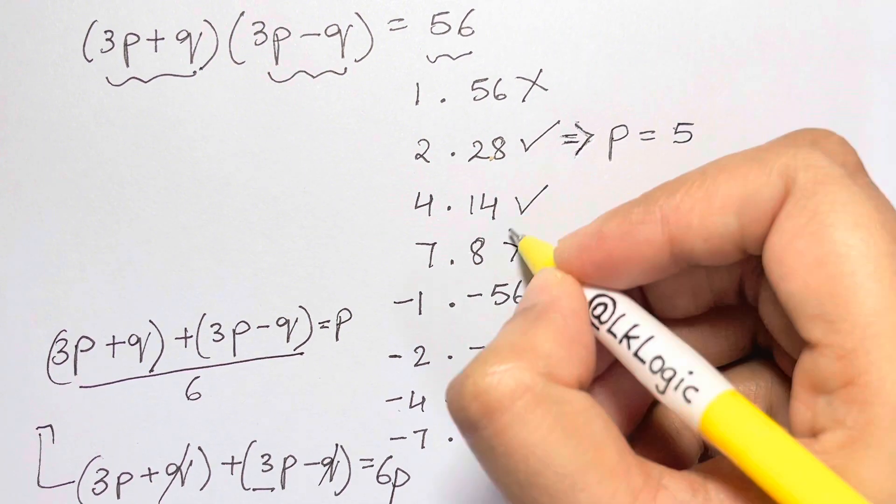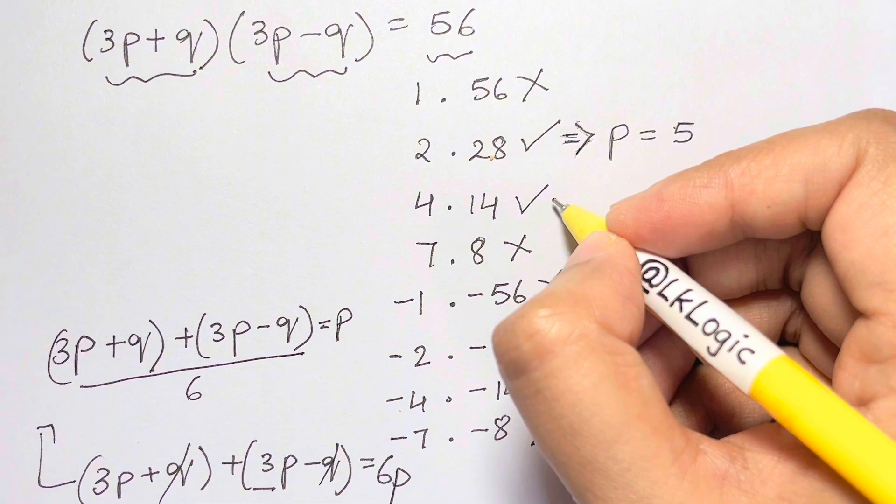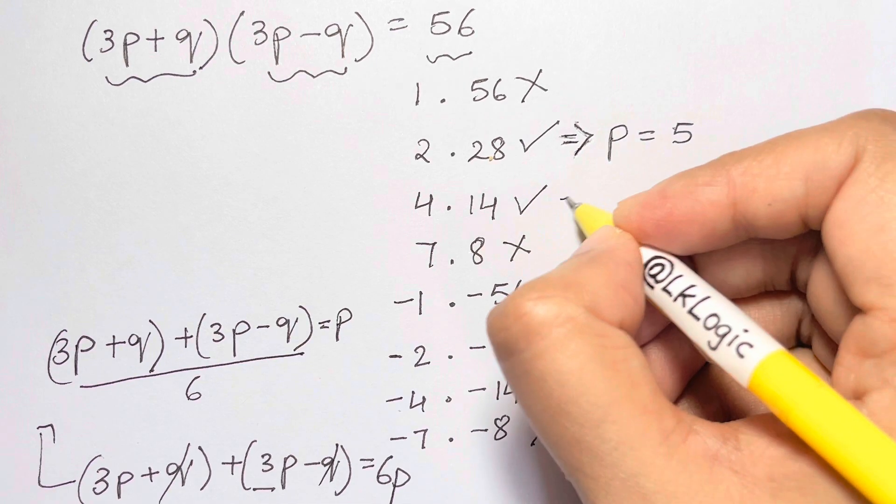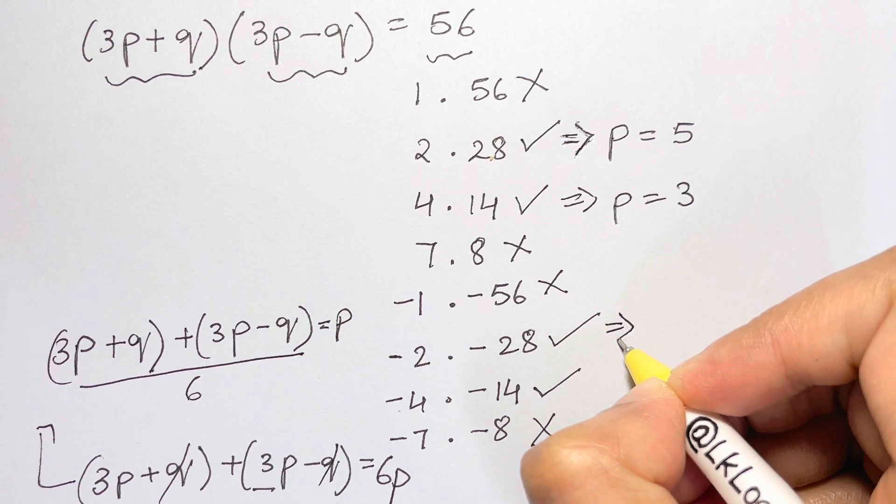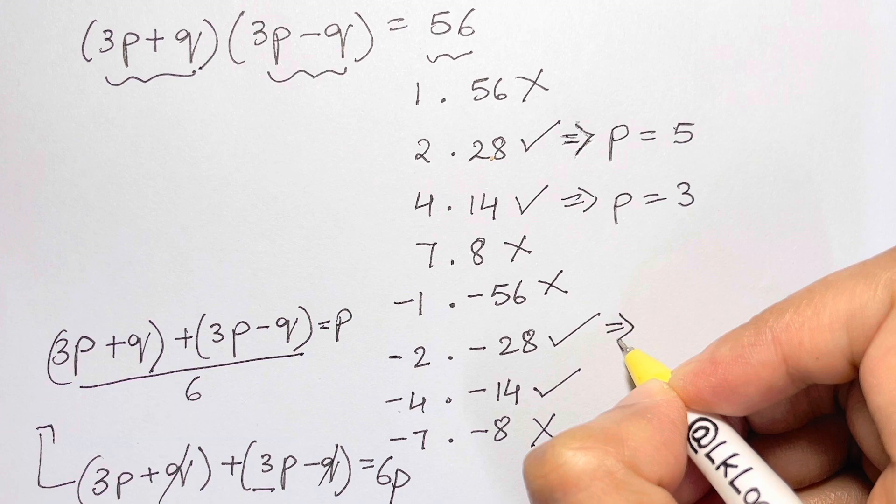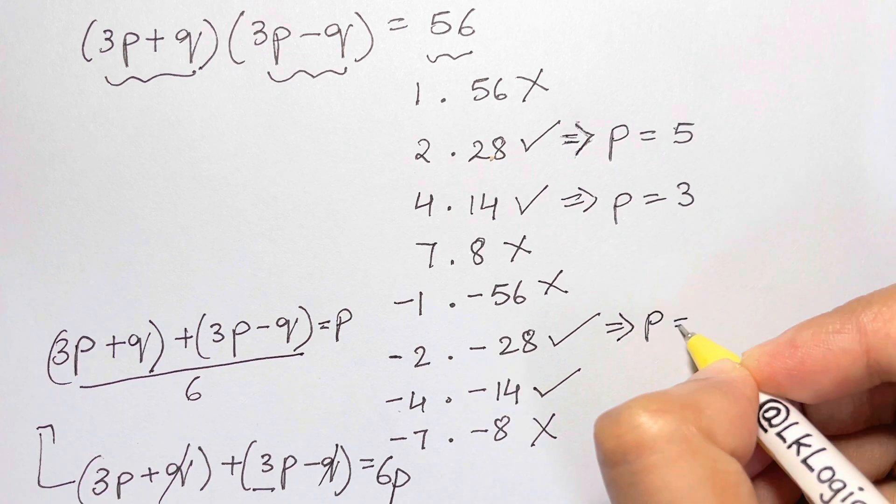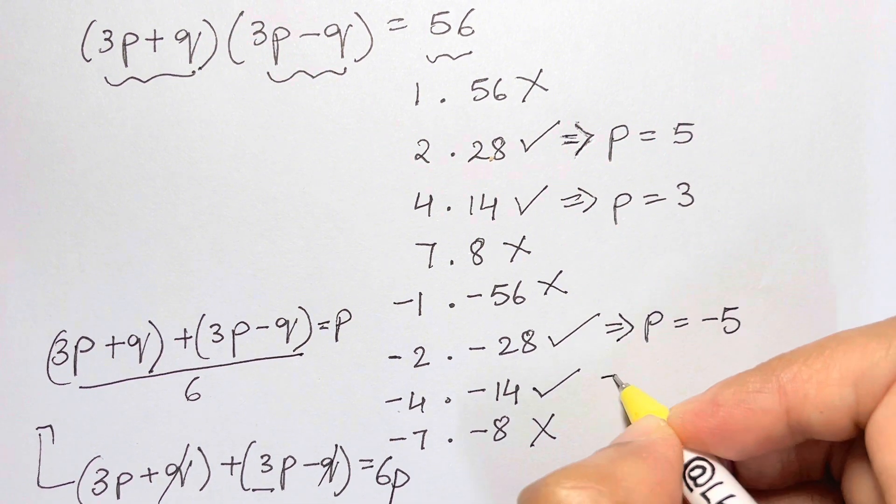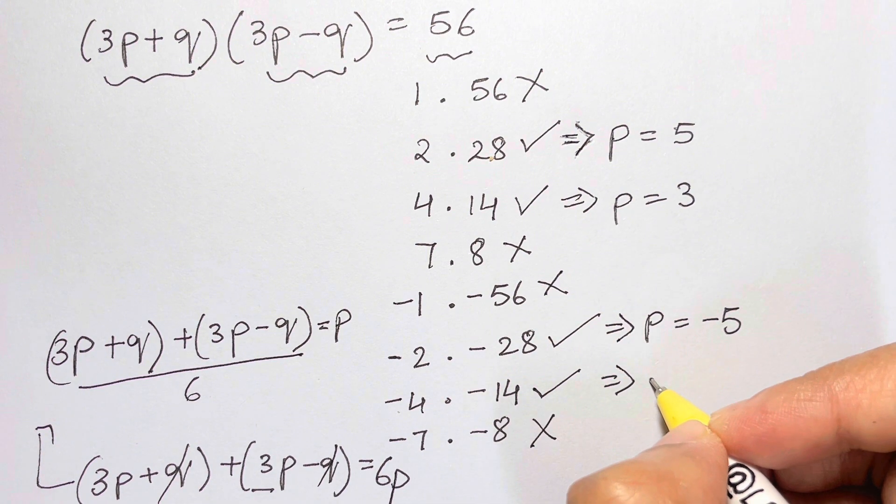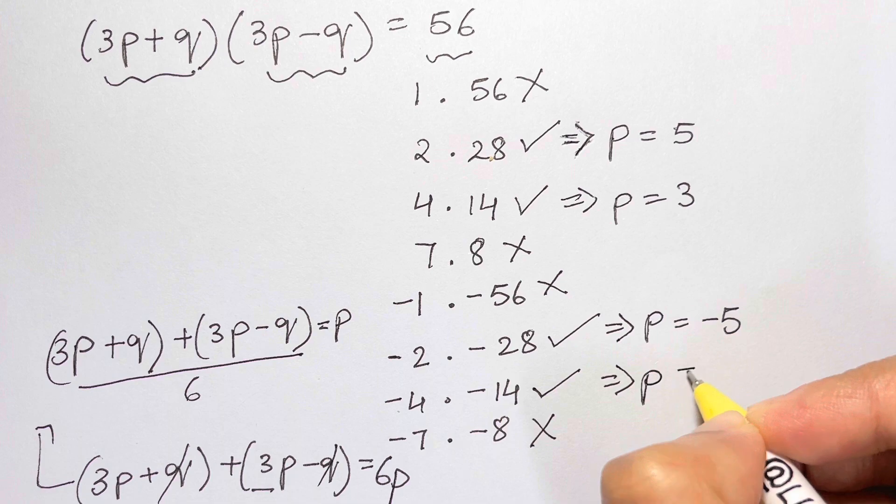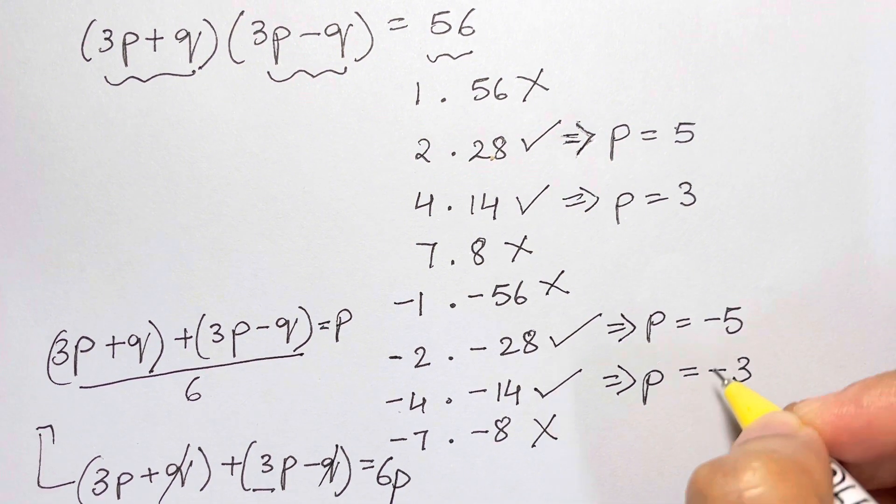From -2 + -28 = -30, we get -30 ÷ 6, so p = -5. And from -4 + -14 = -18, we get -18 ÷ 6, so p = -3. So you have got four values of p.